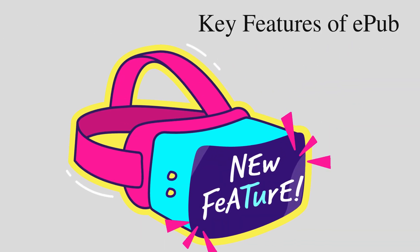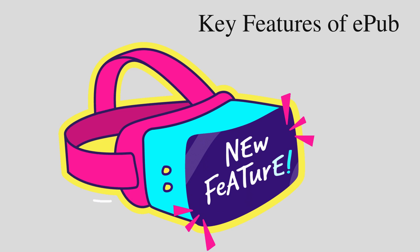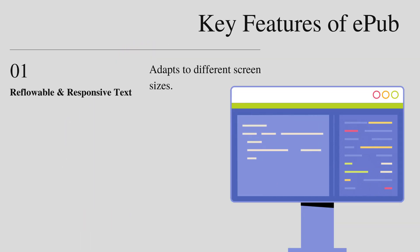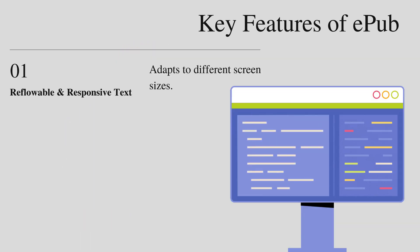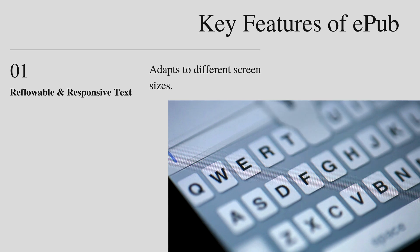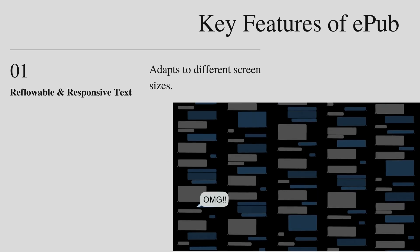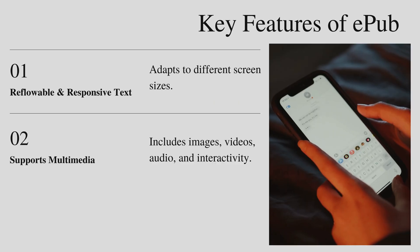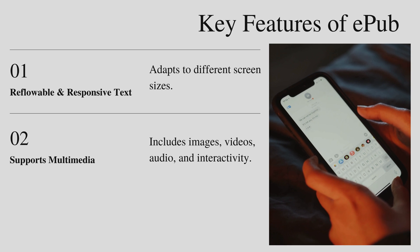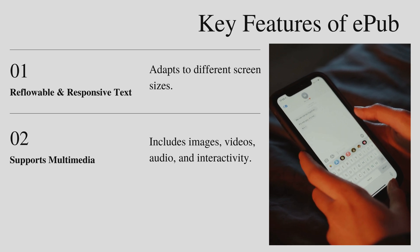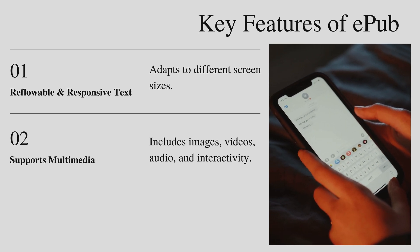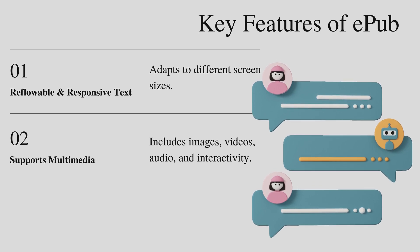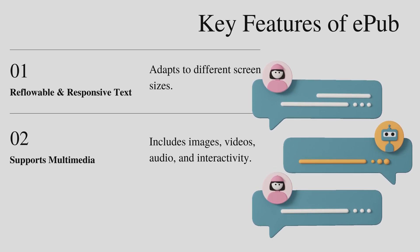Key Features of EPUB. First, reflowable and responsive text — it adapts to different screen sizes. Second, supports multimedia — it includes images, videos, audio, and interactivity.